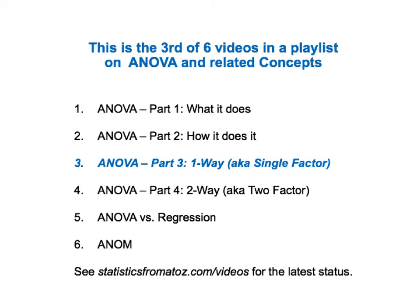This is the third of six videos in a playlist on ANOVA and related concepts. There are four videos on various aspects of ANOVA only. Part one: what ANOVA does. Part two: how it does it. This part three video is about one-way or single-factor ANOVA. Part four is about the two different types of two-way or two-factor ANOVA. Then there is a video which compares and contrasts ANOVA with regression, hopefully giving you a better conceptual understanding of both of these concepts.